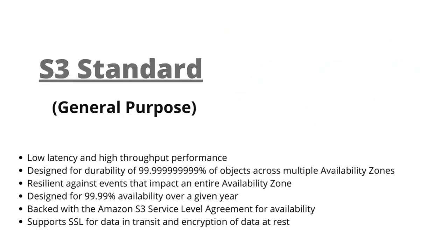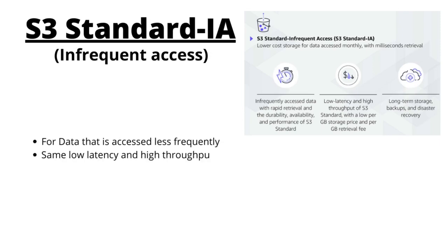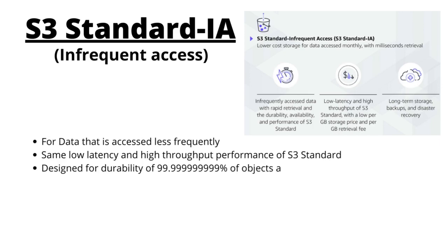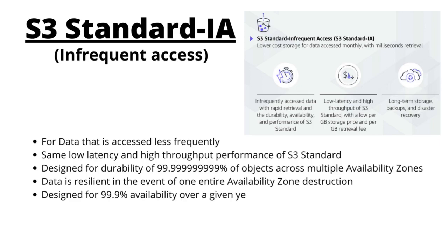The second storage class is Amazon S3 Standard Infrequent Access. It has the same durability and availability as S3 Standard. The only difference is S3 Standard Infrequent Access is used for data which you are going to access less frequently, which lets you save on cost. Key features: same low latency and high throughput as S3 Standard; durability of 99.999999999% across multiple availability zones; designed for 99.9% availability over a given year; and used for long term storage, backups, and disaster recovery.